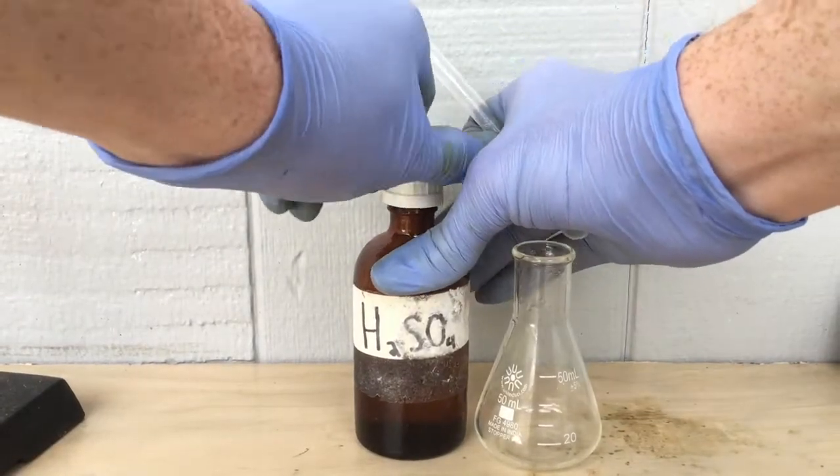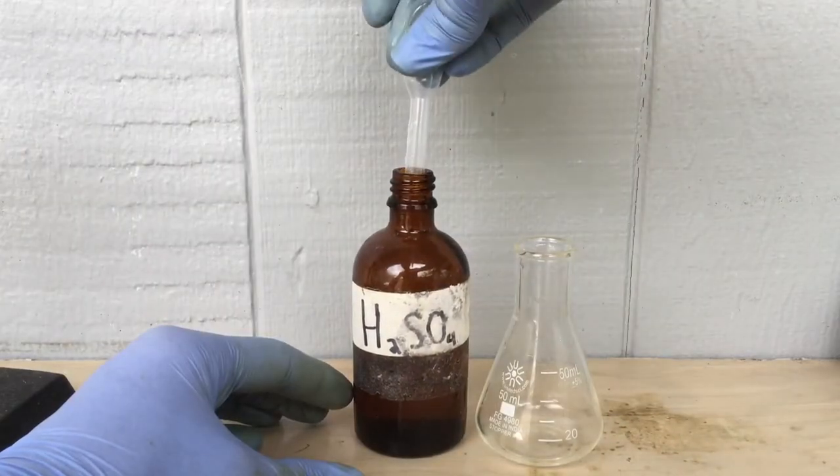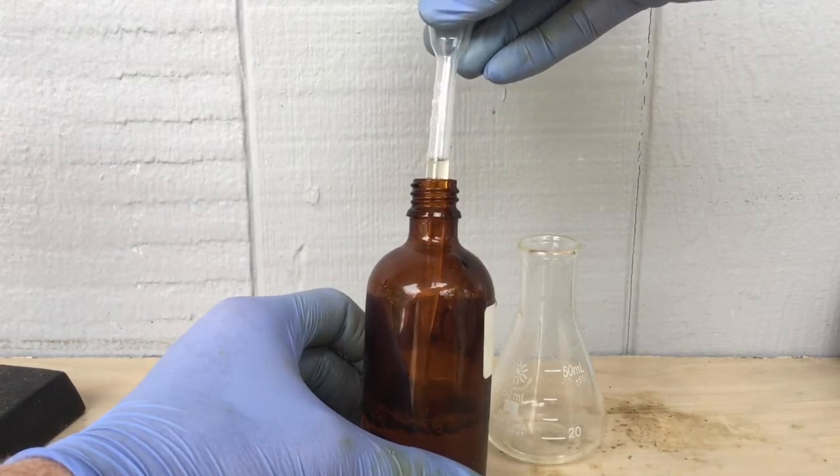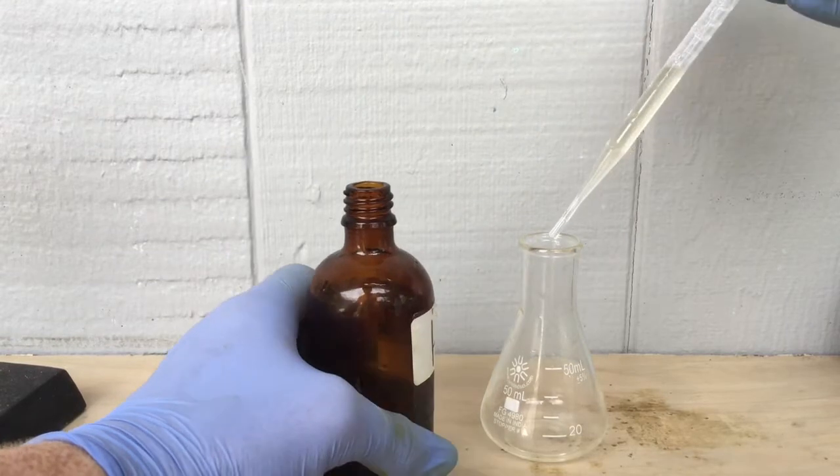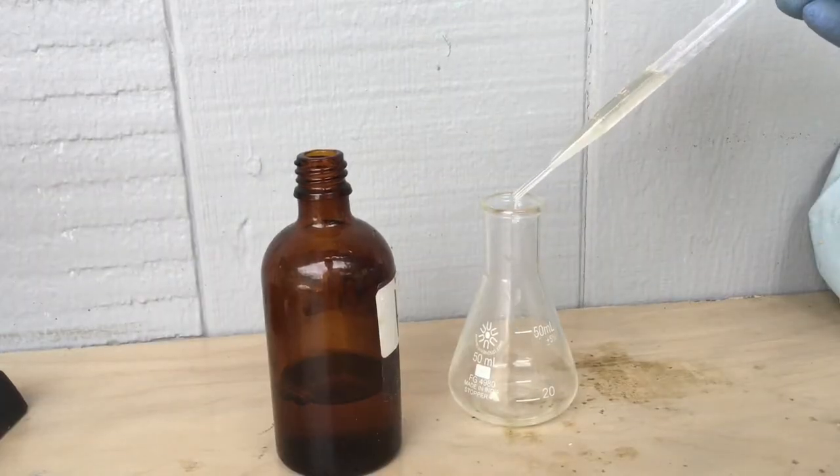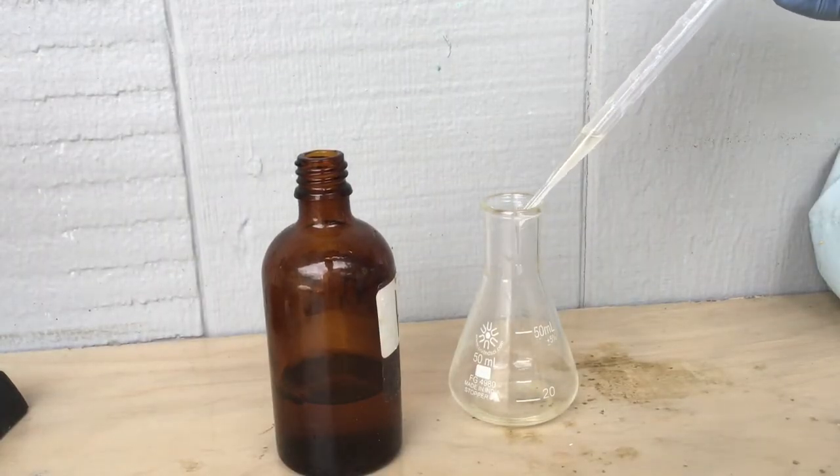Right here is my sulfuric acid of unknown concentration, so I'm just going to take around two milliliters of the acid and put it into my flask. This is known as the analyte, and this is what we're going to be analyzing the concentration of.